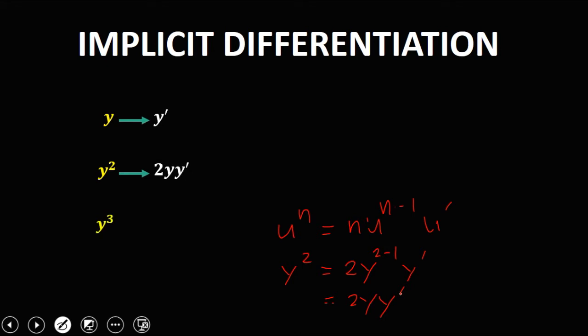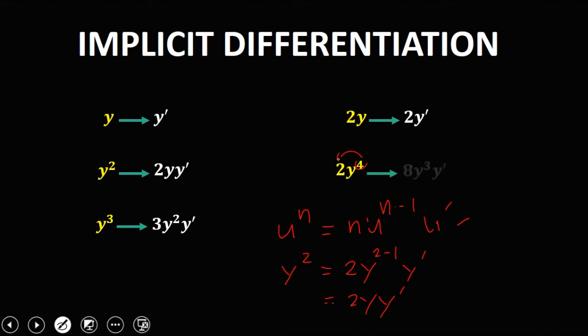For y to the power 3, using the general power rule, the derivative is 3y squared·y prime. For 2y, the derivative is 2y prime. For 2y to the power 4, we multiply the exponent by the numerical coefficient: 2 times 4 gives 8, and the exponent becomes 3, so the derivative is 8y cubed·y prime.